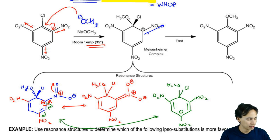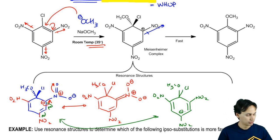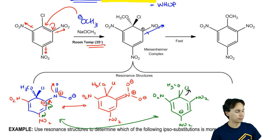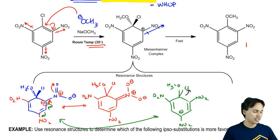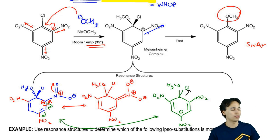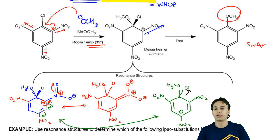Eventually what winds up happening is that the negative charge is going to reform a double bond and kick out the Cl. What you're going to wind up getting is an SNAr product, because you've got a substitution that occurred for a nucleophilic reason — not for an electrophilic molecule, but for a nucleophilic one.